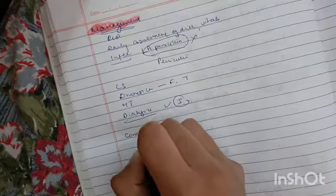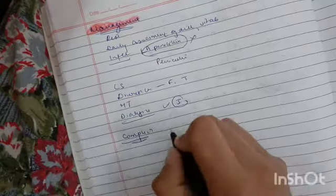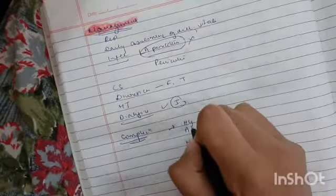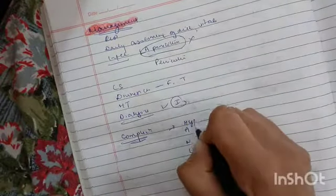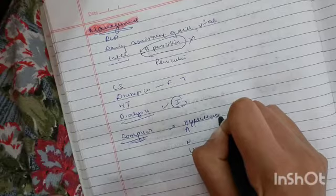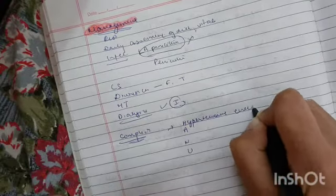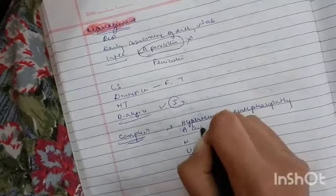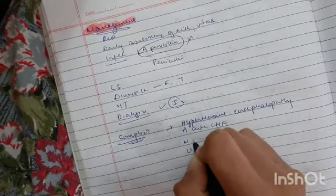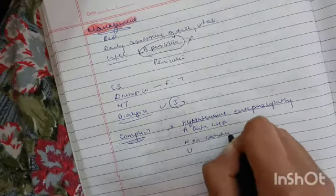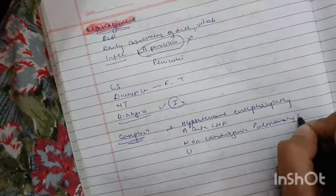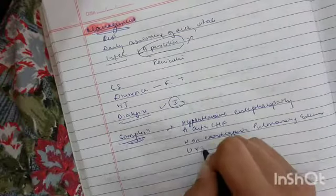For complications, remember the acronym HANO. H stands for hypertensive encephalopathy, A for acute left heart failure, N for non-cardiogenic pulmonary edema, and U for uremia.